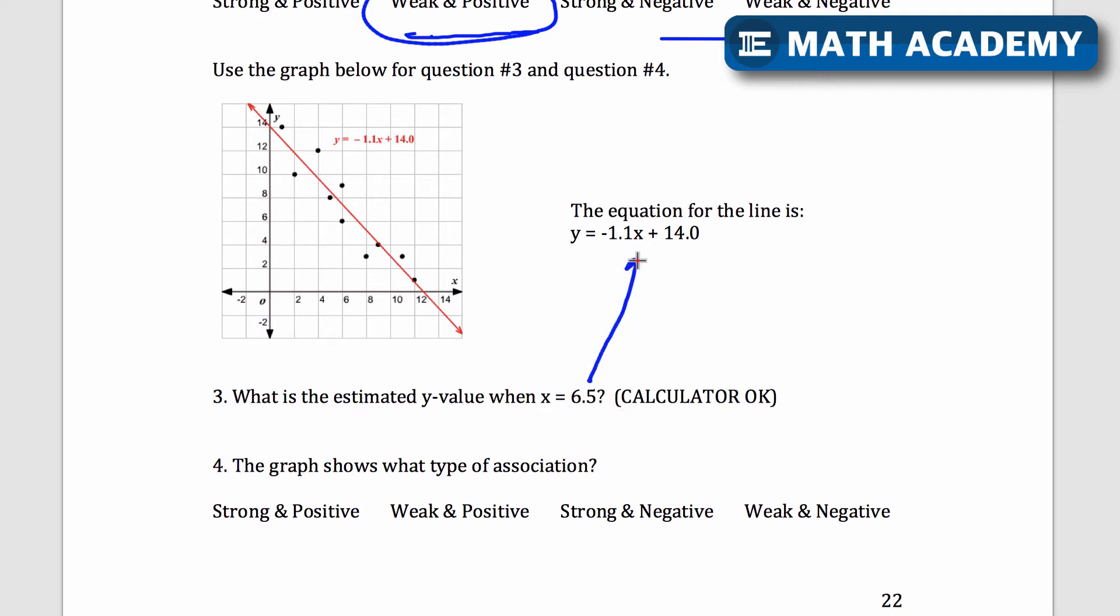That means I can just plug in 6.5 for x. I'm going to use my calculator right now. Negative 1.1 times 6.5 plus 14 gives me an output of 6.85. So if I plug in 6.5 for x that's right about here and I go straight up I should be at a height of about 6.85 right there.